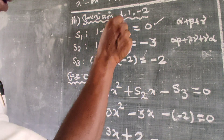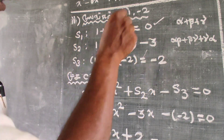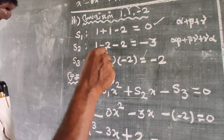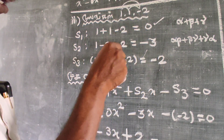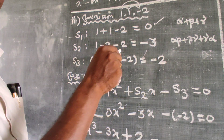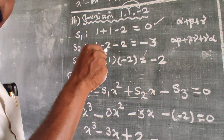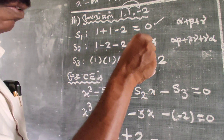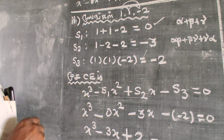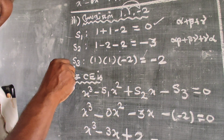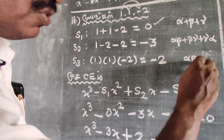S2 is alpha beta plus beta gamma plus gamma alpha. We get: 1 into 1 equals 1, plus 1 into minus 2 equals minus 2, plus minus 2 into 1 equals minus 2. Then 1 minus 2 minus 2 gives minus 3. So S2 is equal to minus 3.